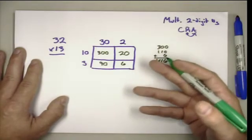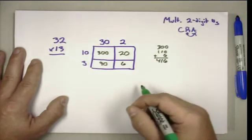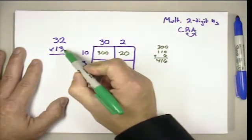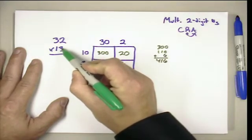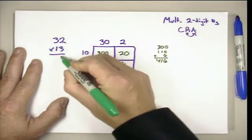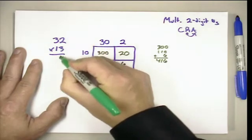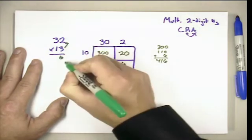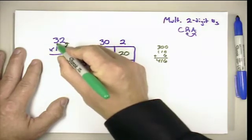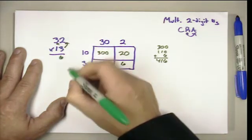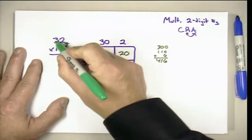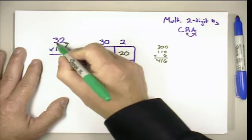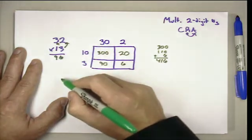We like students to be able to work with the algorithms because they're the most efficient methods. When we ask students to multiply with the algorithm, we're going to do three times two and get six. That's ones times ones, so it goes in the ones place. Then we'll multiply three times three. Three times three is nine, and this is ones times tens, which is tens. Three times three is nine, so that's nine tens in the tens place.